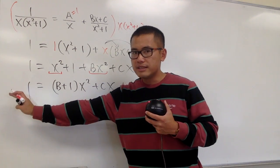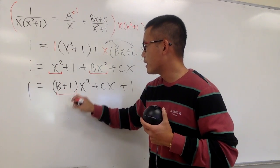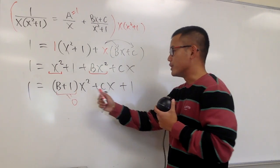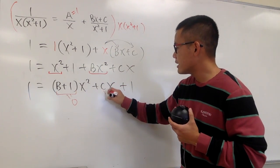Okay, on the left-hand side, we don't have any x squared term, that means this right here has to be 0. Likewise, we don't have any x term on the left-hand side, so that means c has to be 0.